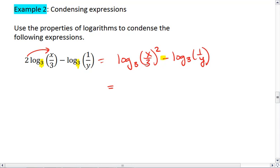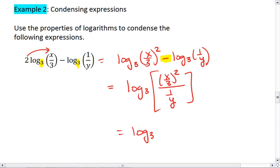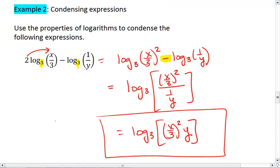Now we see that we're subtracting. Subtraction gets paired with division. We get log base 3 of x over 3 squared divided by 1 over y, which equals log base 3 of x over 3 squared times y. And that's our final answer.